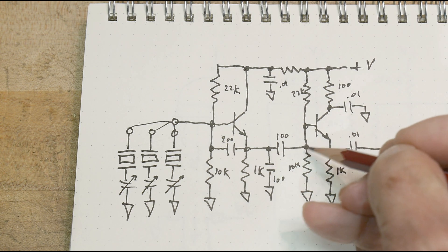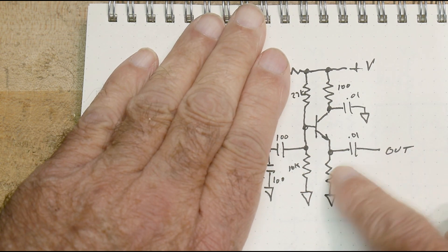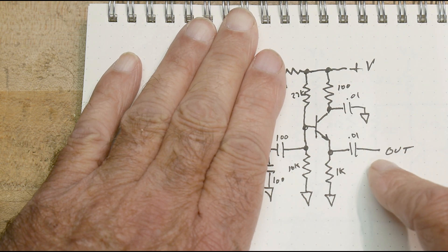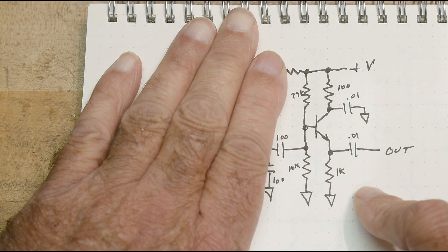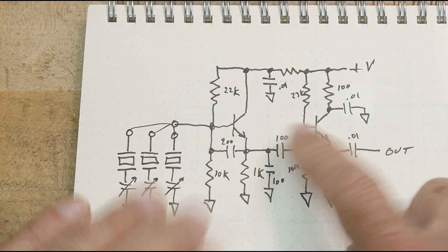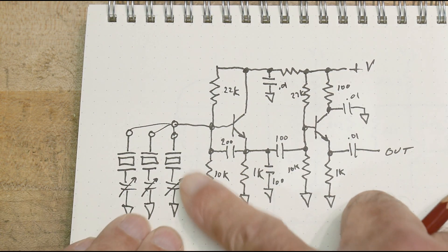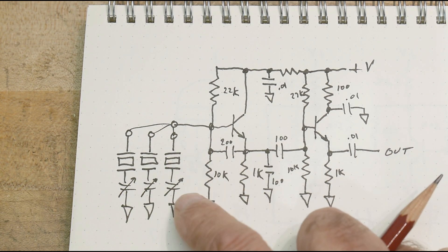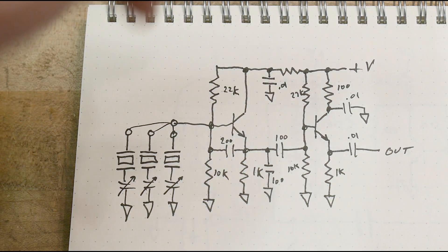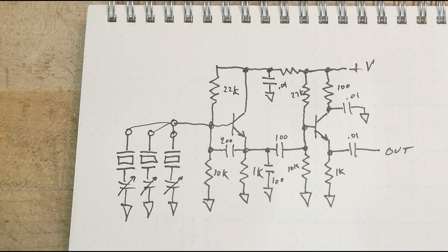And then it gets capacitively coupled into the next section, which is just a little buffer amplifier. And yeah, there you go. So that's all there is to this. It's just two transistors, and a whole bunch of crystals and capacitors, and that's all that was jammed up in that little box.